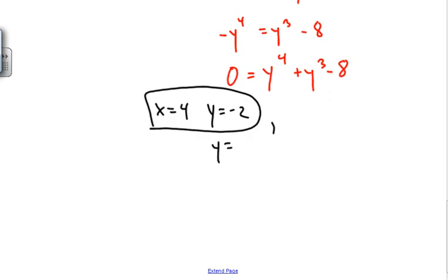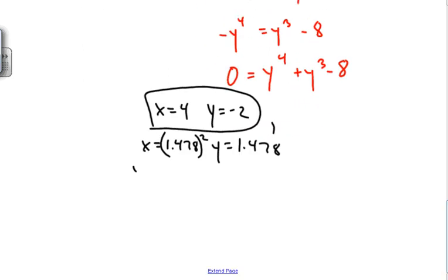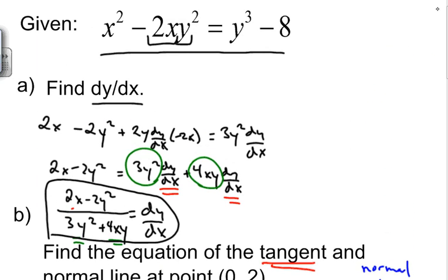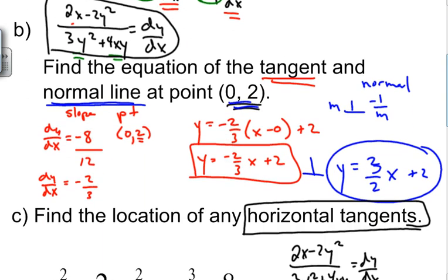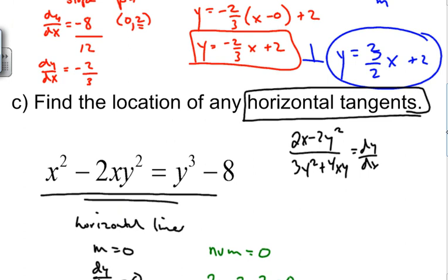Finding the second zero using the calculator, we get y approximately equals 1.478. Squaring that gives x approximately 2.184, so that's our second point for the horizontal tangent. To summarize: know implicit differentiation to find dy/dx, use it to find tangent and normal lines, and find horizontal tangents by setting dy/dx equal to zero.